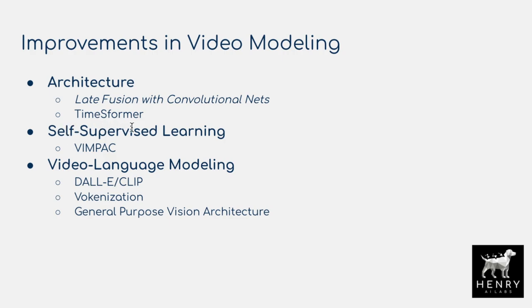Now we have new advances in self-supervised learning. The VIMPAC strategy is really interesting — you use the vector quantized variational autoencoder to compress image frames into a discrete codebook space regularized with prior knowledge in the Bayesian variational autoencoder. You then use that for self-supervised learning objectives like contrastive learning and masked language modeling, predicting the masked discrete tokens from the compressed representation from the vector quantized variational autoencoder.